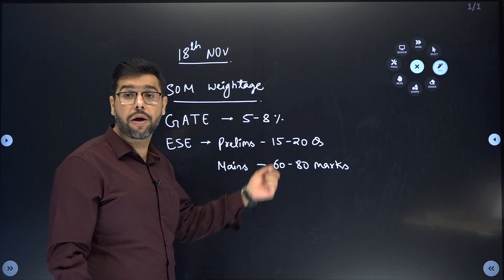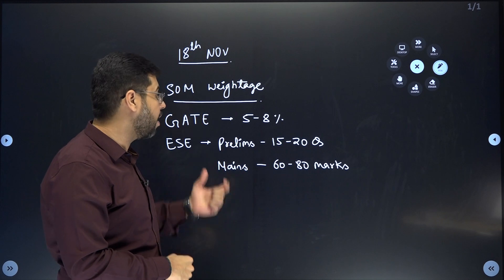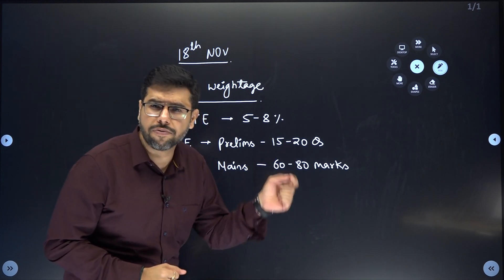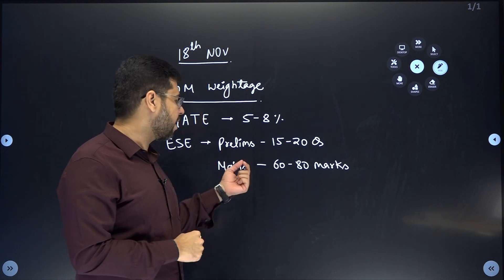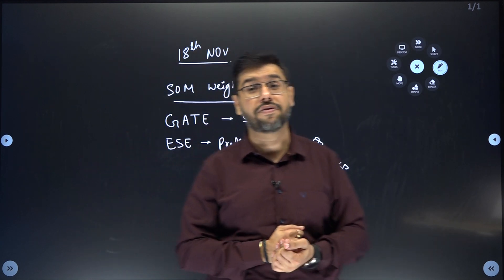If we talk about weightage, in GATE around 5 to 8 percent marks you can expect. In Engineering Services Prelims, 15 to 20 questions you can expect, and in Mains around 60 to 80 marks you can expect from this topic.